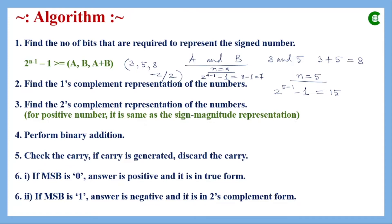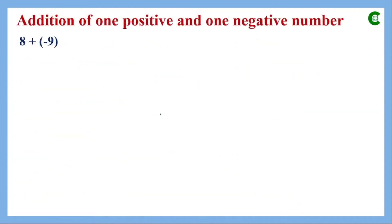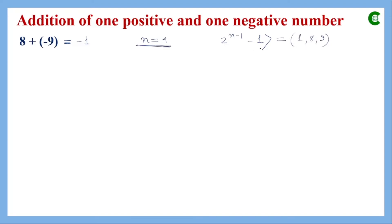This algorithm will become clearer when we solve examples. The first example is addition of one positive and one negative number: +8 and -9. As per the algorithm, the first step is to find the value of n. In the decimal number system, 8 plus (-9) equals -1, so we focus on the positive values 1, 8, and 9. We choose n such that 2 raised to the power n minus 1, minus 1 is greater than or equal to 1, 8, and 9.